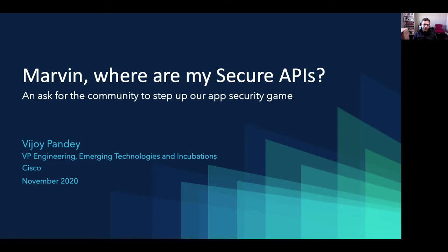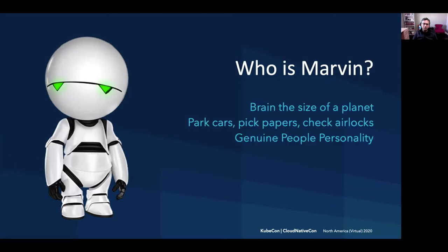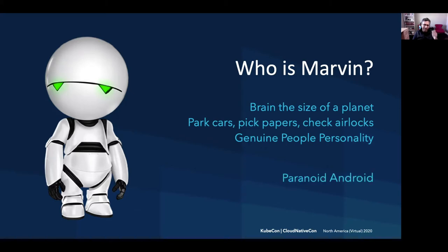But before we begin, we have to ask: who is Marvin? If you haven't read The Hitchhiker's Guide to the Galaxy, go and get a copy now. Marvin is a robot with a brain the size of a planet. By his own account, he's at least 50,000 times smarter than a human. But he's being made to park cars, pick papers, check airlocks — not really job satisfaction worthy. Since he is built with Genuine People Personality, or GPP tech, he also has human emotions, so he gets depressed with all of this mindless work. But most importantly, he is a paranoid Android.